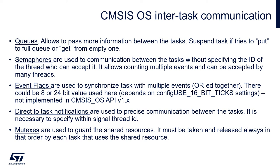Another quite interesting technique is direct-to-task notification, also called event threads, which enables precise communication between tasks. One task sends a combination of bits to another specific task. The addressee is really well known and well identified, and it can be used to have much more control over the signal passed between tasks.